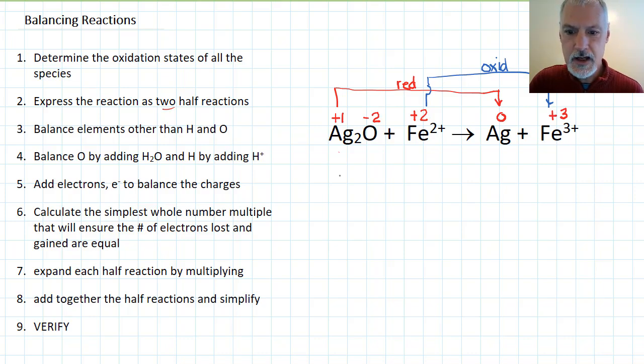So let's break it into the two half reactions. First, the silver oxide turning into silver. The first thing I do is balance everything other than hydrogen and oxygen. So I'll need a two here to balance the silvers. Now to balance the oxygens I'm going to add a water molecule to this side. To balance the hydrogens we'll add two hydrogen ions.